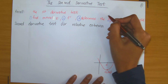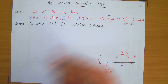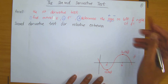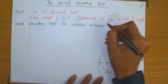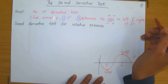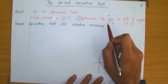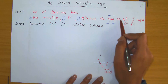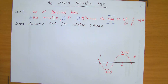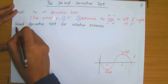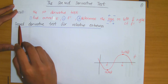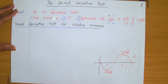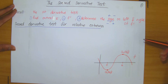So if the sign changed from positive to negative when you move from left to right, then that meant that we had a relative maximum. Now the second derivative test, as given by the name, is a test for relative extrema which uses the second derivative.